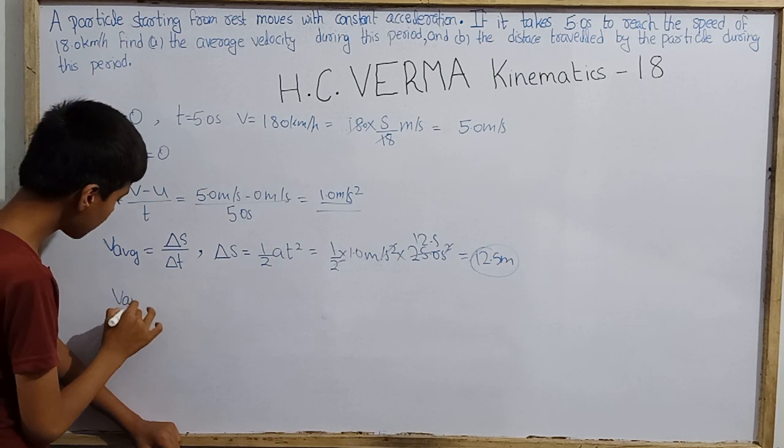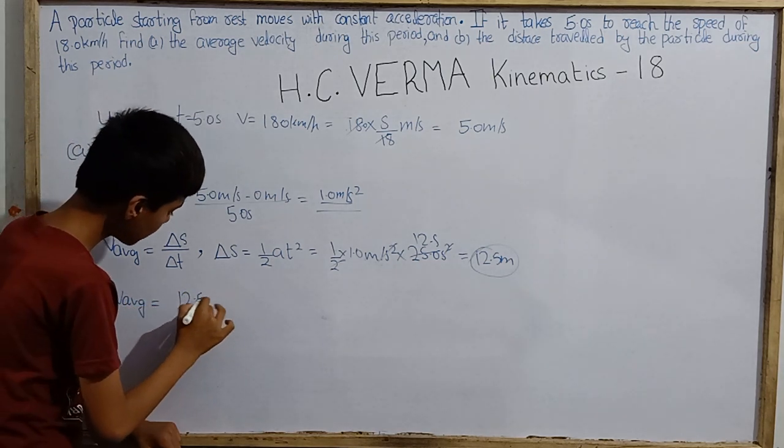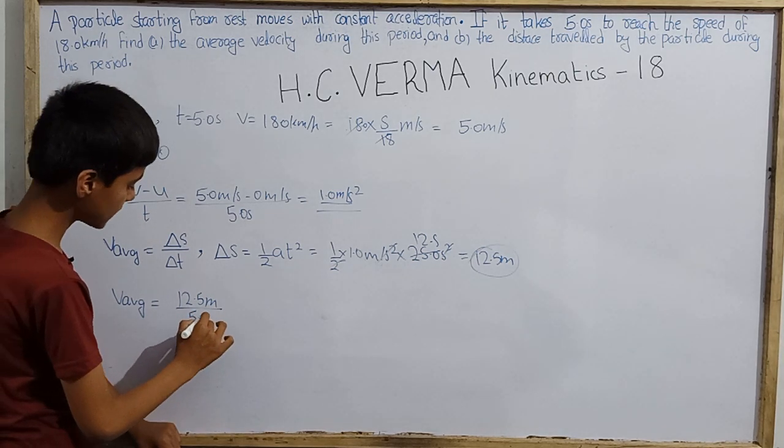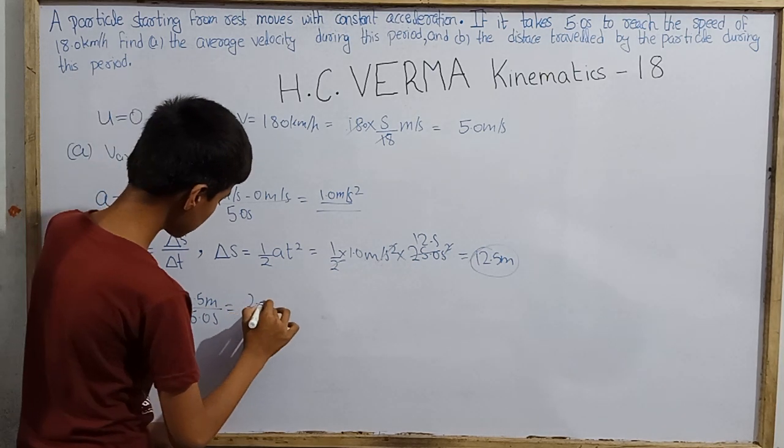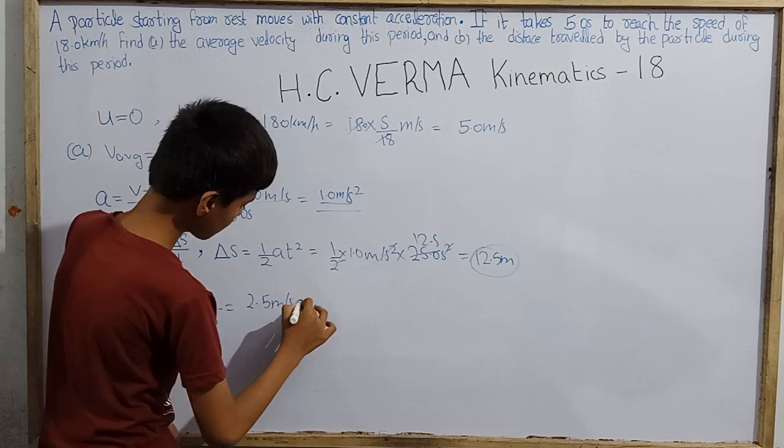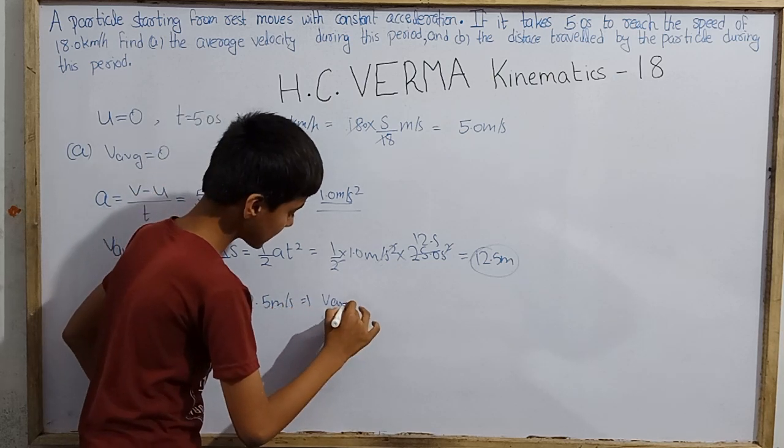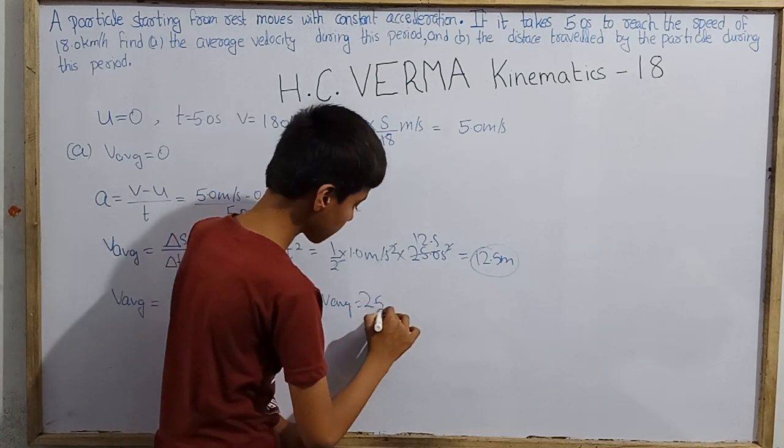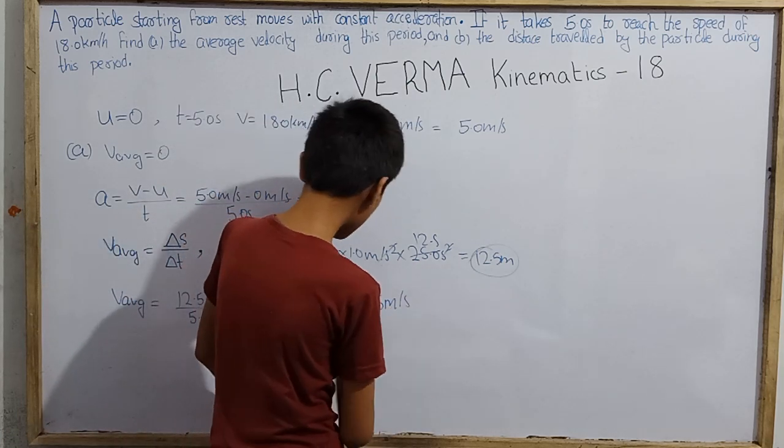Let's see, how much is the average velocity? 12.5 meters over 5.0 seconds. This is 2.5 meters per second. That means this particle's average velocity is 2.5 meters per second. This is not complete.